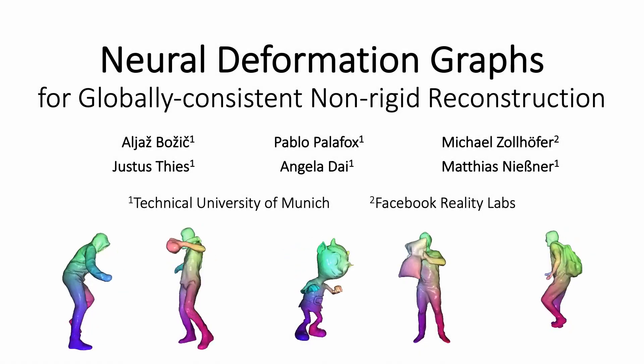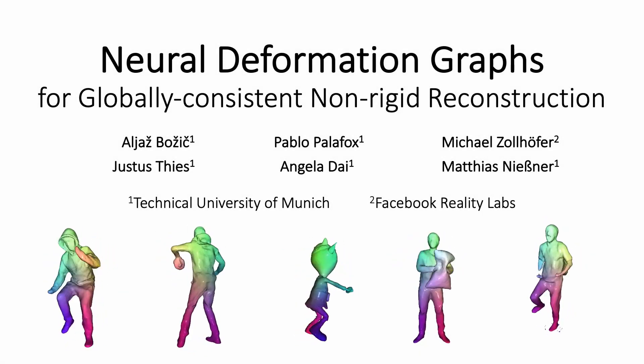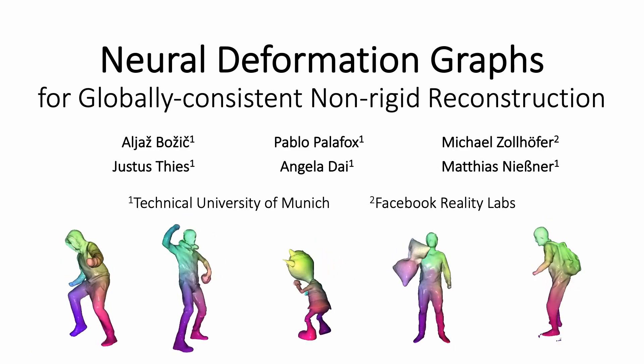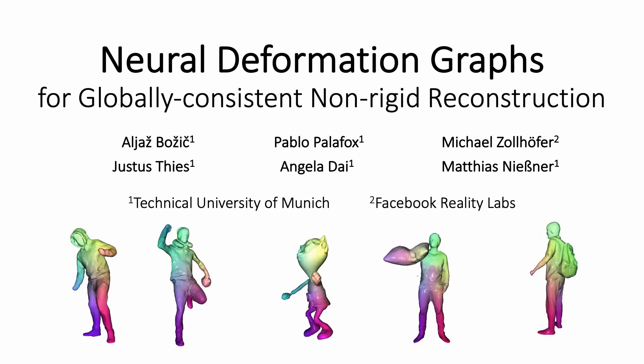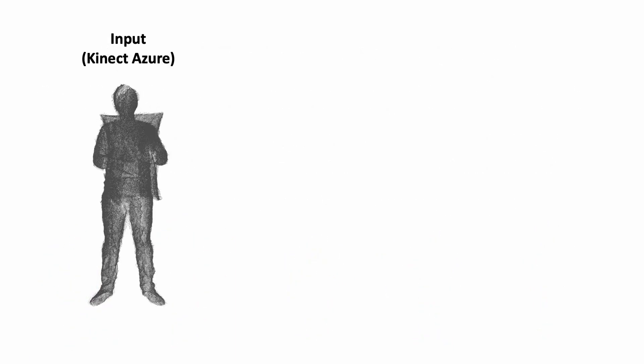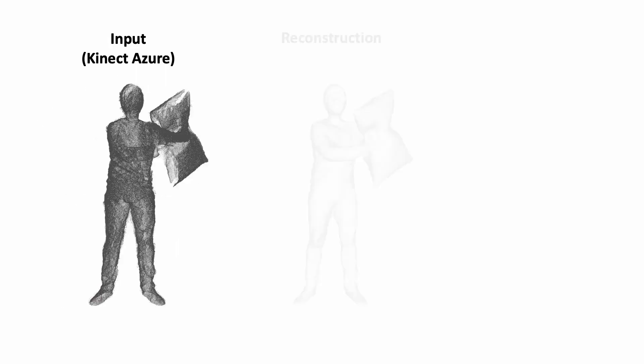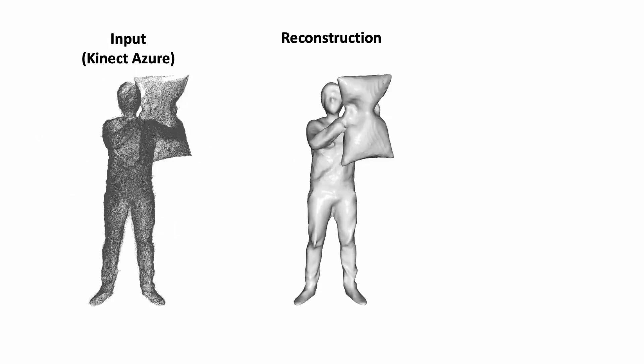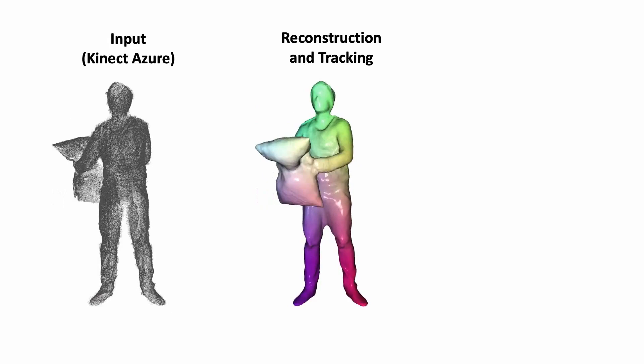We present neural deformation graphs for globally consistent non-rigid reconstruction. Given a sequence of a non-rigidly moving object recorded by commodity depth sensors, our method reconstructs and tracks the surface in a globally consistent manner.